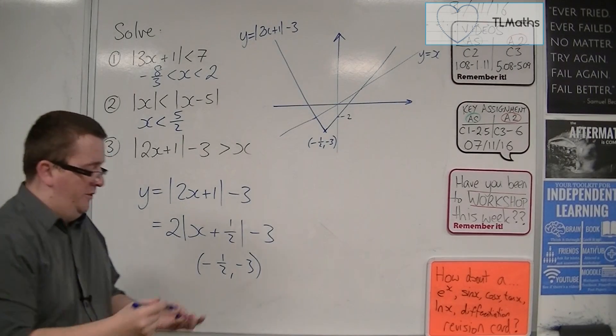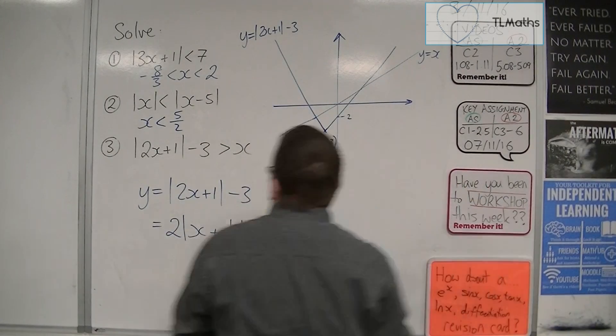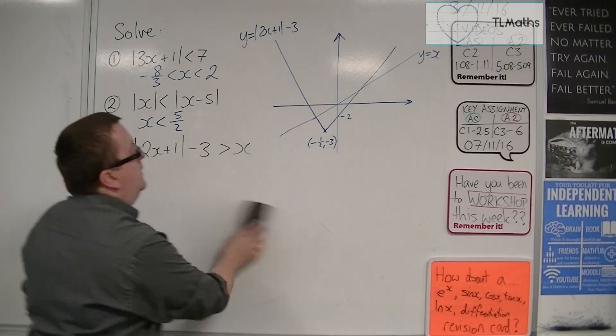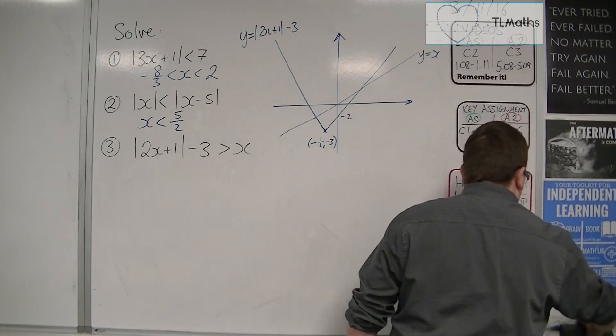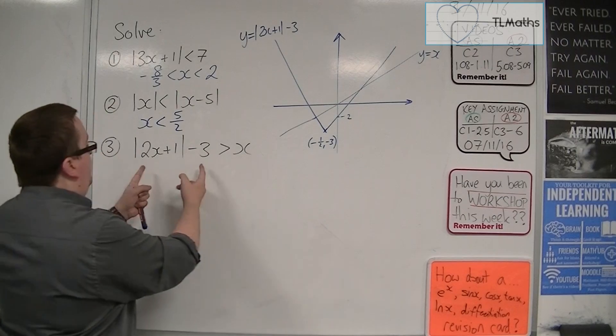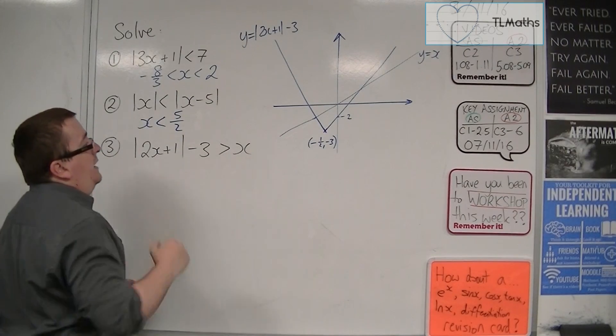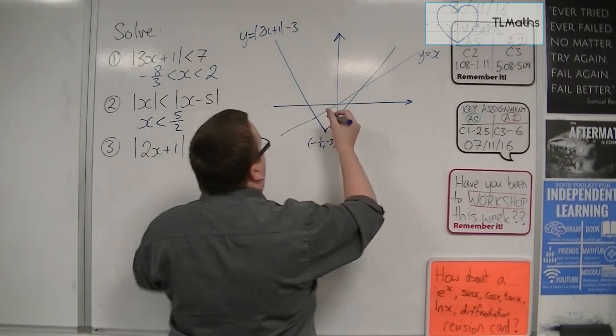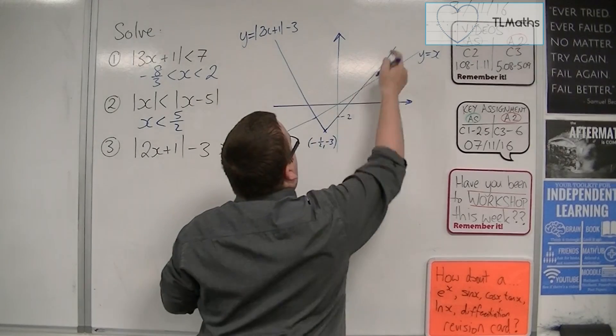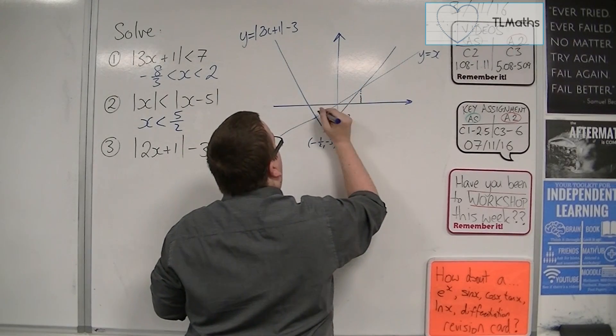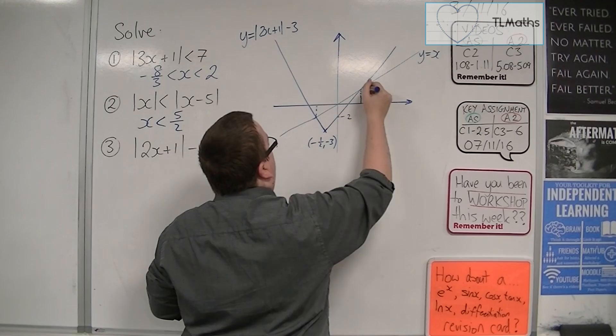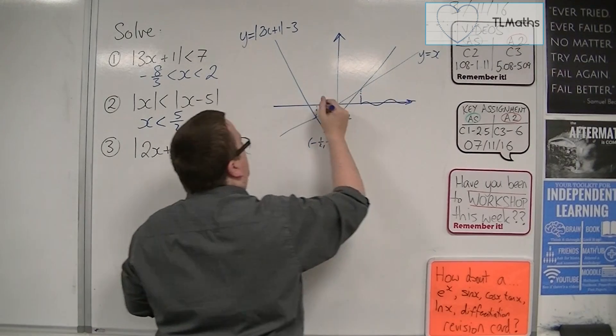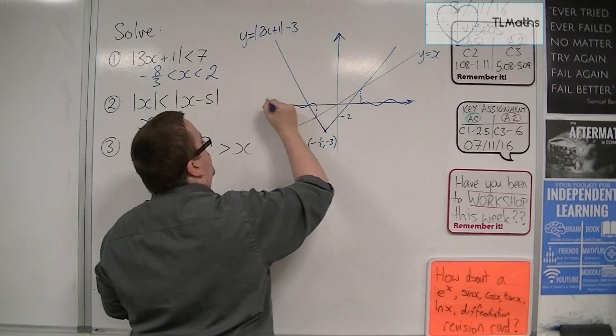So I've got to find where is the v-shape above x. So it's above it there and there. So I need to find these two intersection points. So I'm wanting that region and I'm wanting that region.